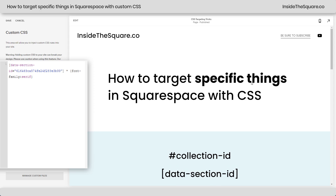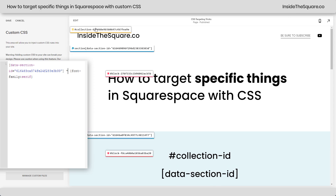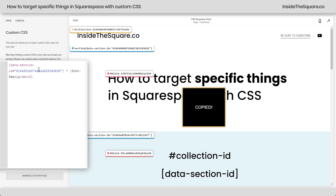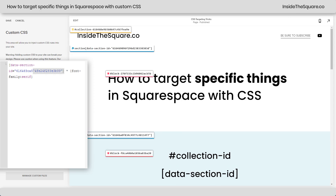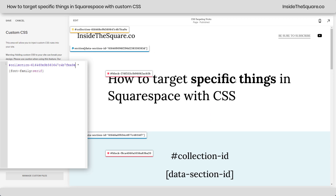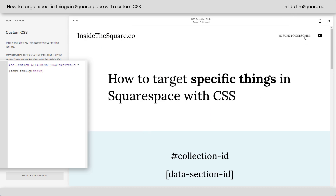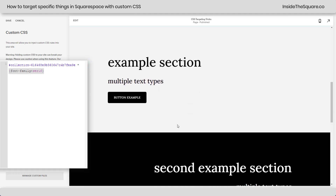And then collection ID will be the entire page. Turning on the extension, grabbing the collection ID and placing that in the very beginning — every single type of font on this page, even down to the menu link and the title, is going to be targeted with this particular code change.